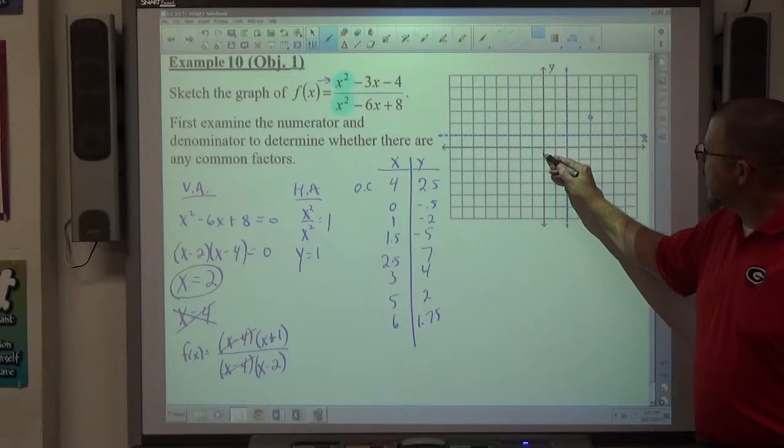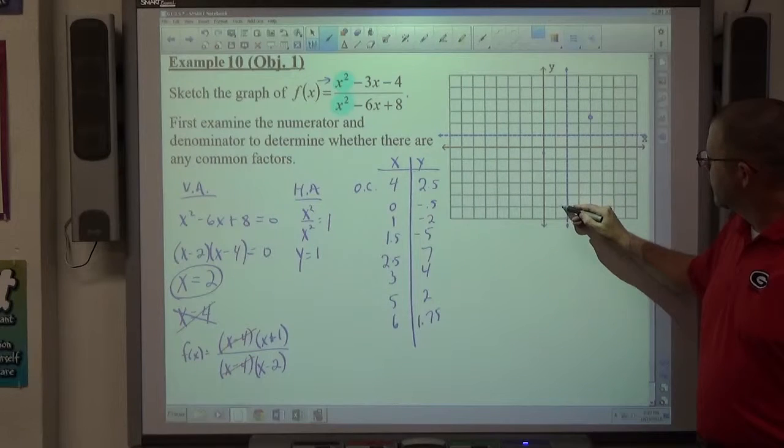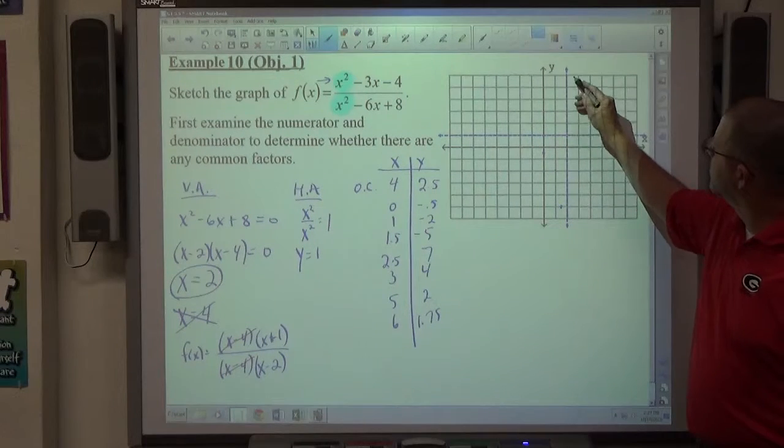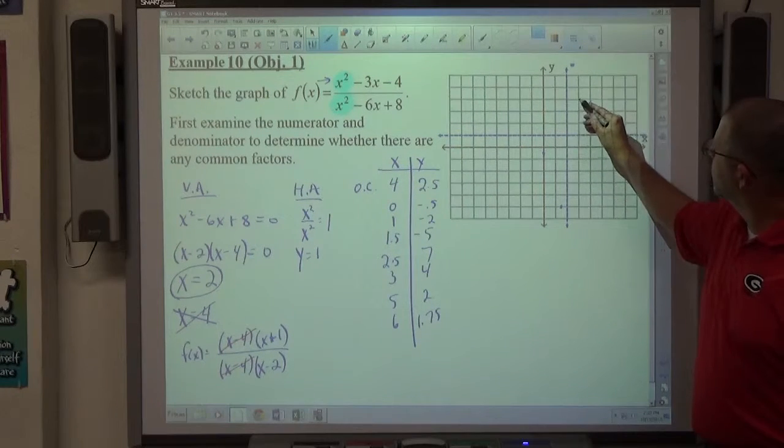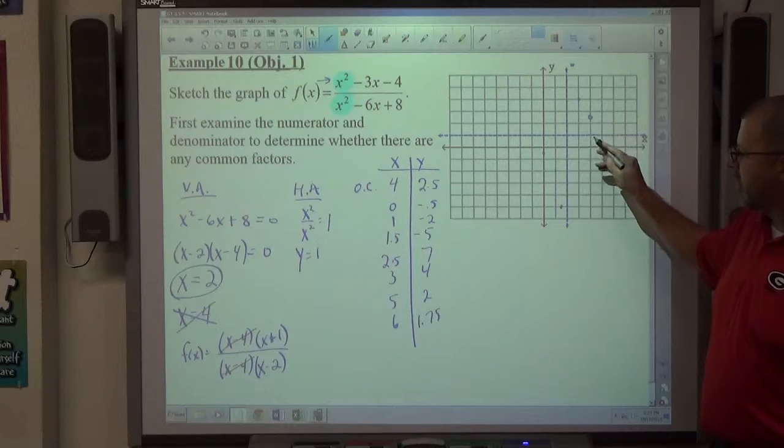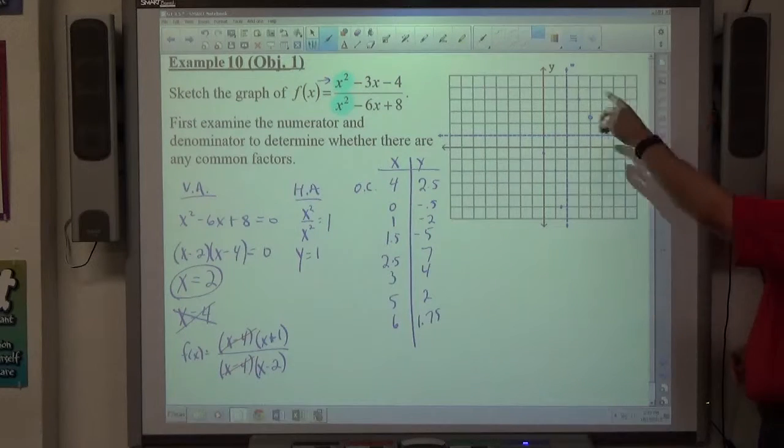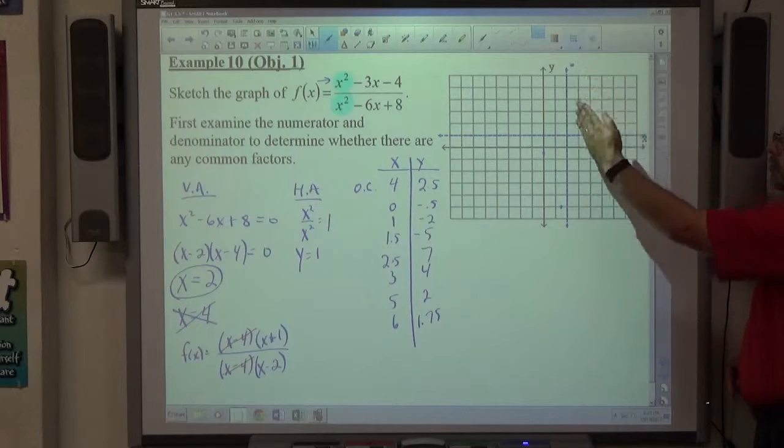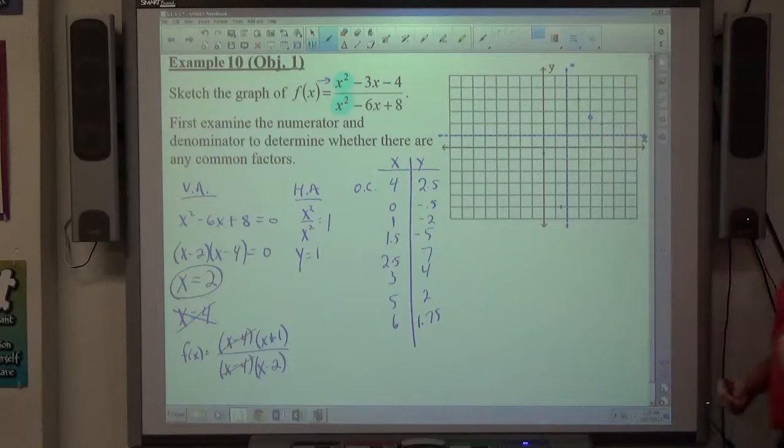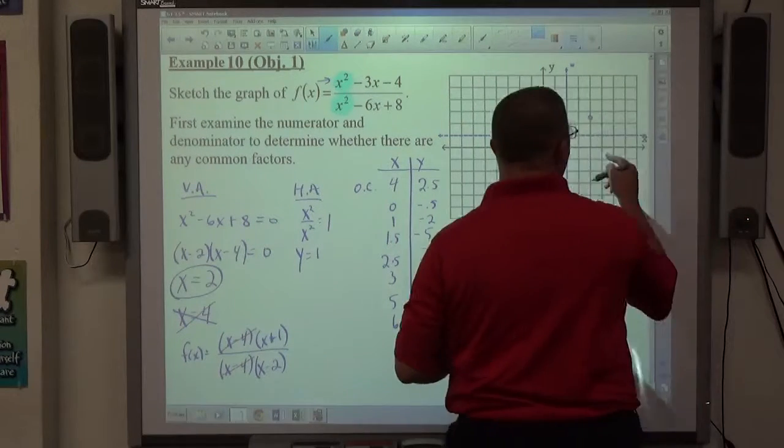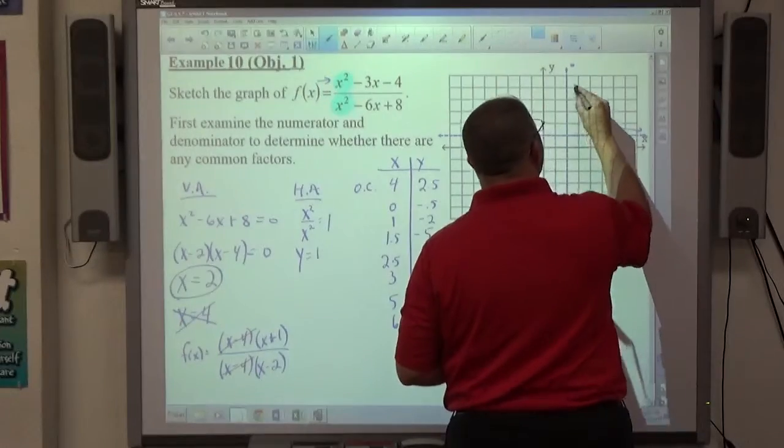0, -0.5 is right here. 1, -2 right there. 1.5, -5. We got 2.5, 7. And 6, 7 about here maybe. 3, 4 is here. 4, 2.5 we already got taken care of. 5, 2. 6, 1.75. So this side here looks to be plenty of points for me to figure it out. It's going straight up at the asymptote. It's leveling off towards the horizontal asymptote. We're far enough away from zero. We should expect it not to cross the horizontal asymptote at this point. So it would be a lot closer than that if it was going to cross. So it's just going to flatten out going that way. It's going to go vertically that way.